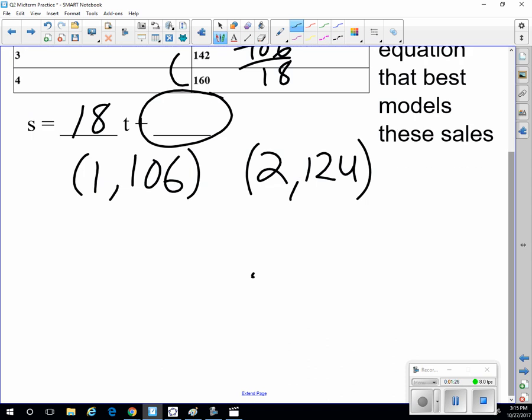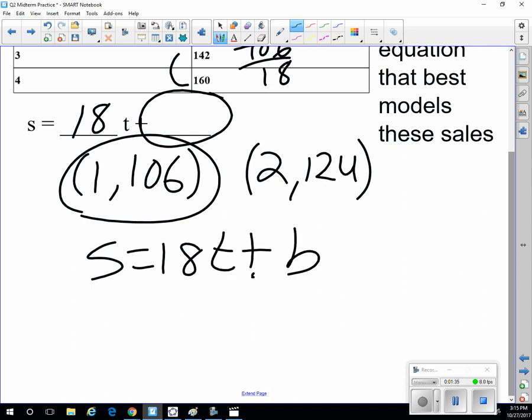So if we say I plug this point into S equals 18T plus B, the sales is 106, and 18 times 1 plus B.